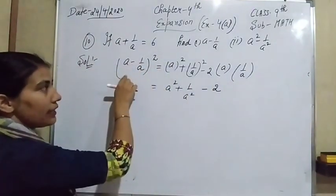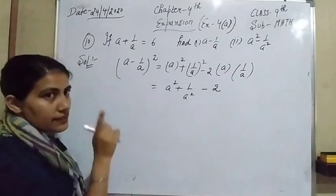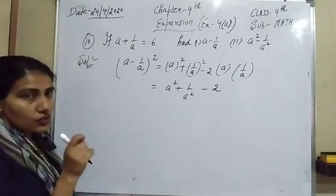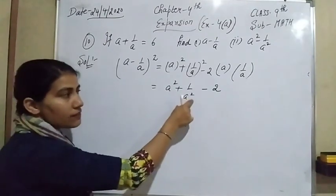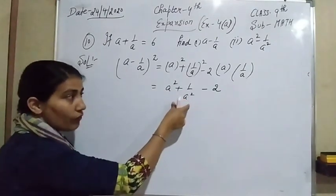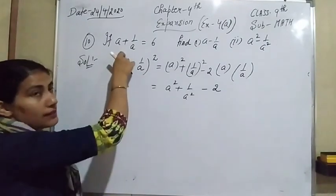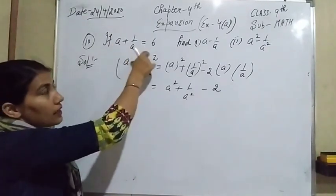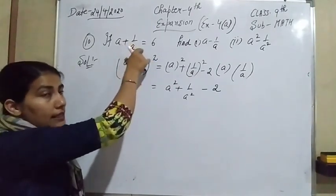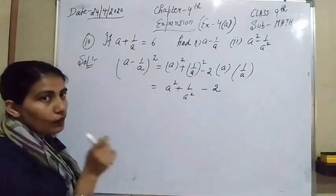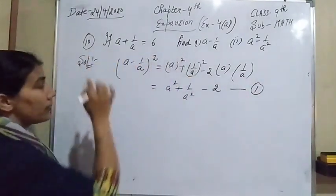Now we have to find only A minus 1 over A, but we don't know the value of A square plus 1 over A square. So in these types of questions, firstly we have to find the value of A square plus 1 over A square. If we square both sides of the given equation, we can easily get that value. Name it equation number 1.